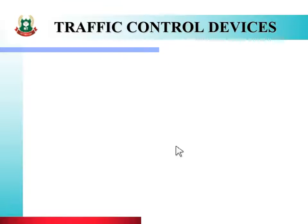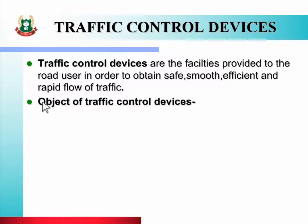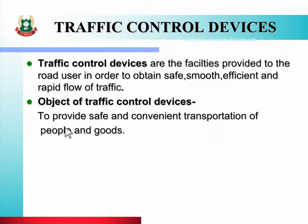Aap sabhi ko maloom hai ki traffic control kaise hota hai. First of all, let us see the definition of traffic control devices. Traffic control devices are the facilities provided to the road user in order to obtain safe, smooth, efficient, and rapid flow of traffic. Vehicle user ko vehicle safe chalane ke liye jo suvidhaen provide ki jaati hain, unhe traffic control devices kehte hain. The main object of traffic control devices is to provide safe and convenient transportation of people and goods — aasaan aur surakshit parivahan provide karne ke liye traffic control devices road side par lagaate hain.